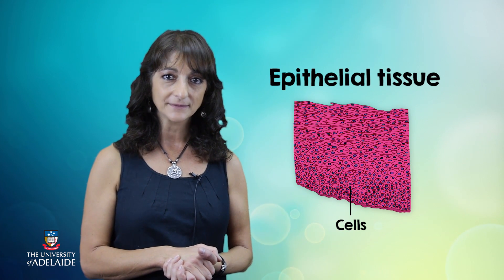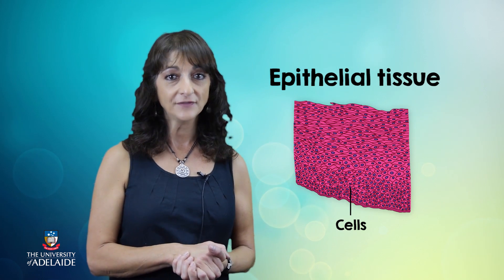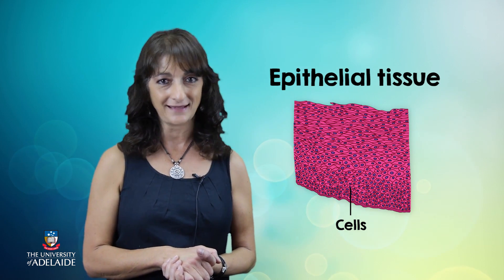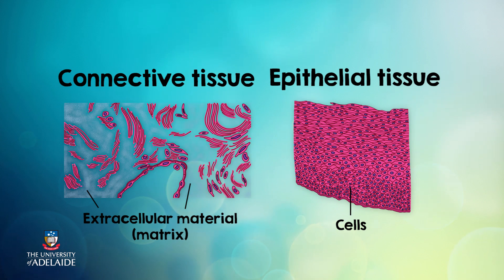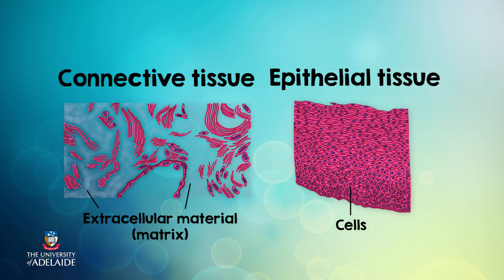Welcome to lesson one, where we'll be looking at the characteristics and functions of connective tissue. Last week Rachel discussed that the bulk of epithelial tissue is made up of cells. Connective tissue differs from epithelial tissue in many ways, but primarily the bulk of connective tissue is made up of extracellular material — that is, the material that makes up the spaces between the cells.